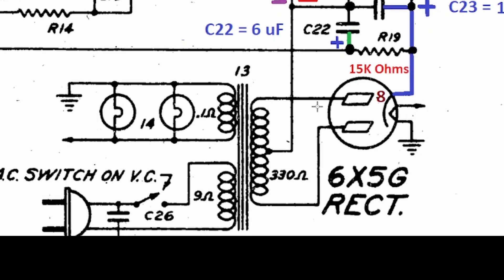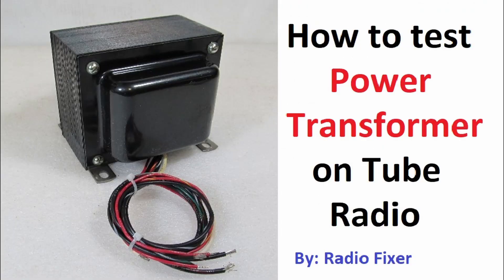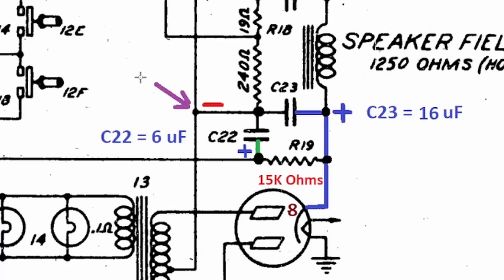I also remember when I was testing this power transformer, which I highly suggest you watch that video, where I went through step-by-step how to test power transformer before getting started. In that video we identified the ground wire of the multi-section capacitor was soldered right here, a black wire. By knowing that, we know this is the negative side.